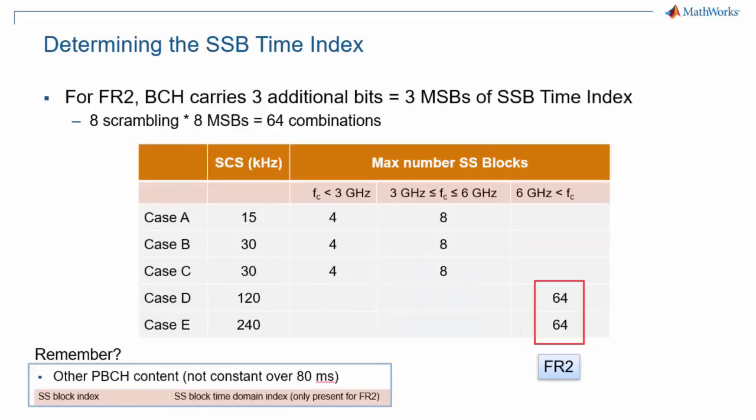As you may remember from the video of this 5G Explained series about synchronization signal block for FR2, the MIB carries 3 bits for time index. Those 3 bits, along with the knowledge of which DMRS was used, let the UE determine one of 64 possible SSB indexes.